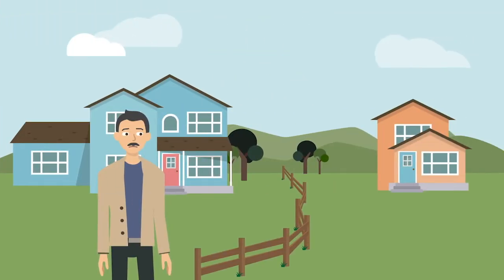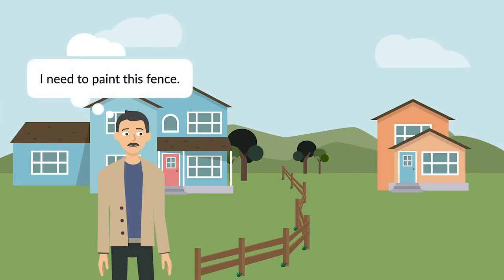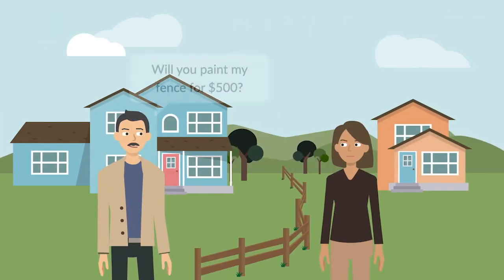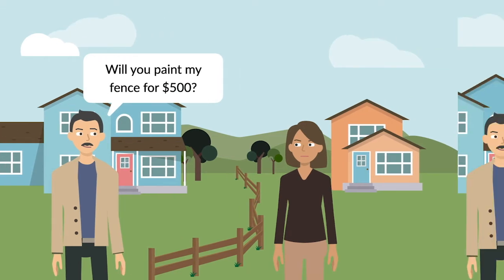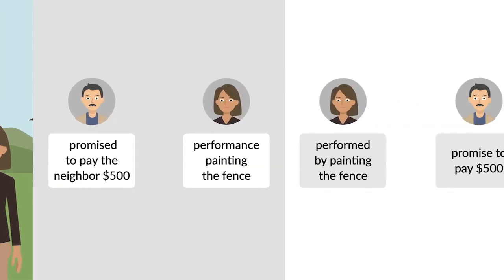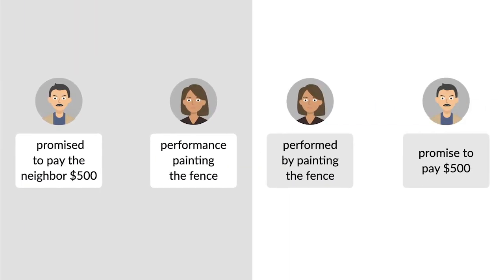For example, a lawyer needed to paint the fence in front of his house. He asked his neighbor if she would paint the fence in exchange for $500. The neighbor agreed and painted the fence. The lawyer then paid her $500. This scenario is an example of consideration.